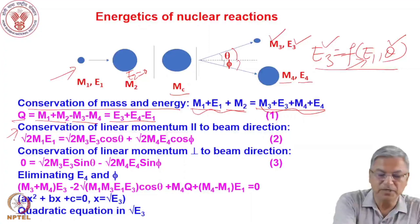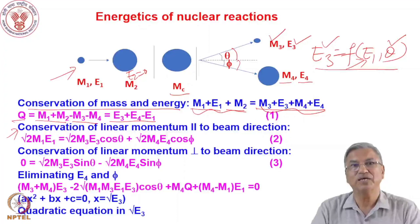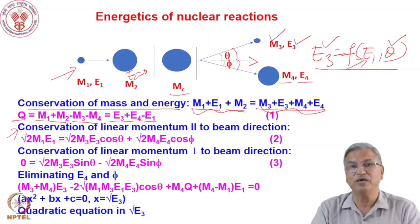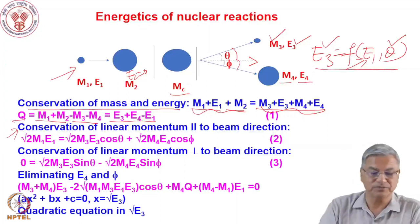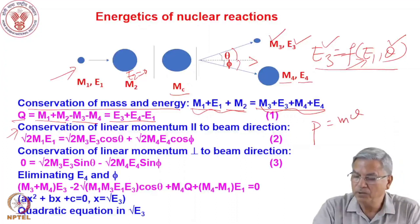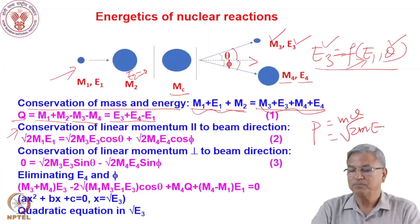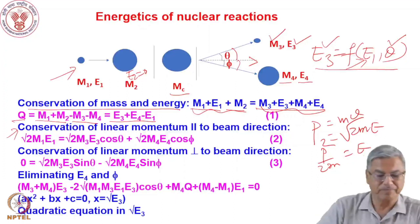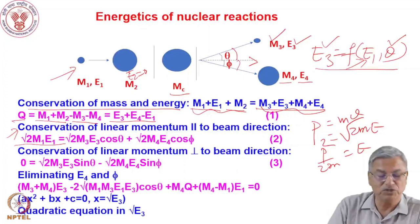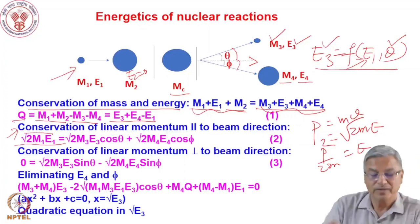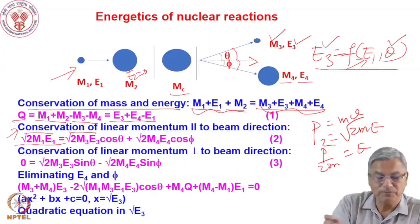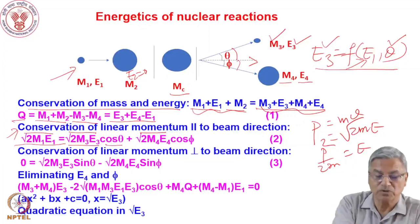The second equation is conservation of linear momentum parallel to the beam. Since linear momentum is a vector quantity, it has components along the beam and perpendicular to the beam. The momentum P equals Mv, or we can write P squared over 2m equals E, so P equals root(2mE). For the incoming projectile along the beam direction: root(2·M1·E1) = root(2·M3·E3)·cos(theta) + root(2·M4·E4)·cos(phi), where the first term is for the ejectile and the second for the heavy residue.